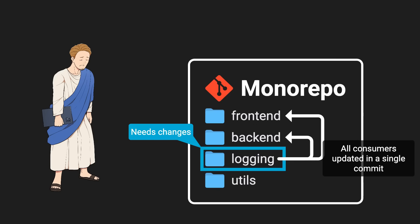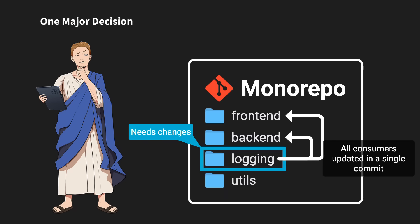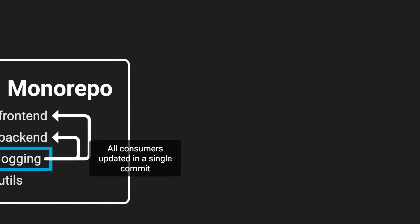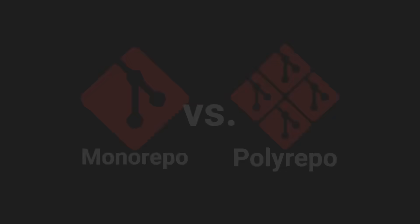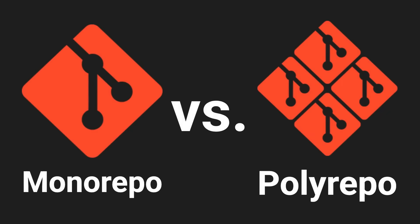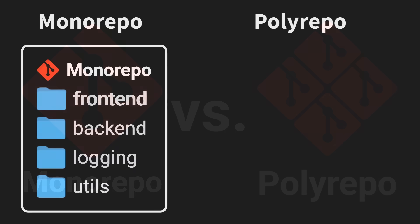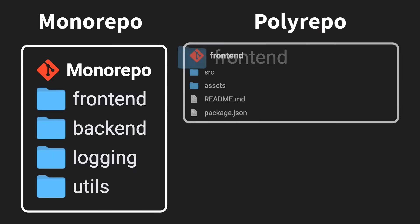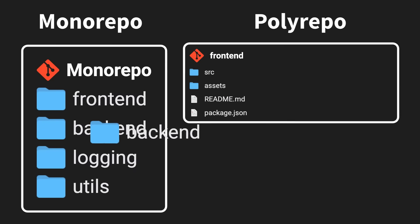Before adopting a monorepo, your team has to make one major decision that can affect the entire development process. I'm going to show you exactly what that decision is, so you can make the right call for your team. In a polyrepo, you put each module in its own repo.